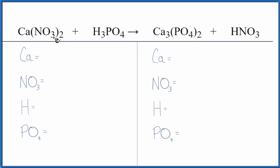In this reaction, we have calcium nitrate plus phosphoric acid. This is a double displacement reaction. The calcium and the hydrogen, they're changing places.